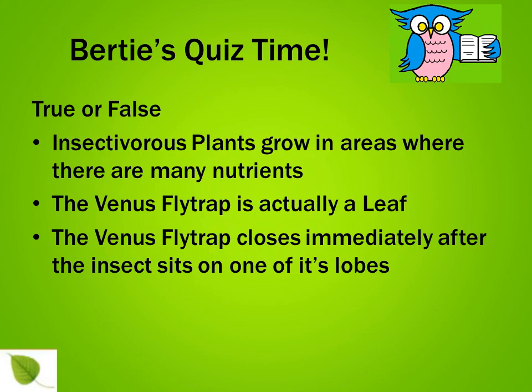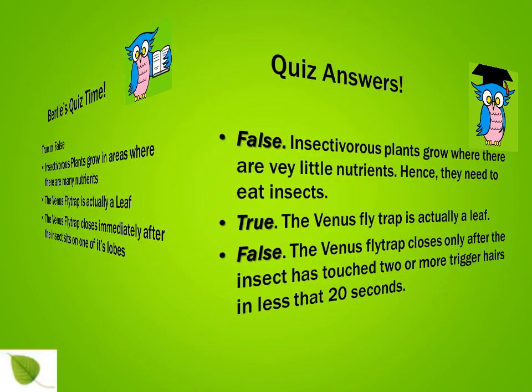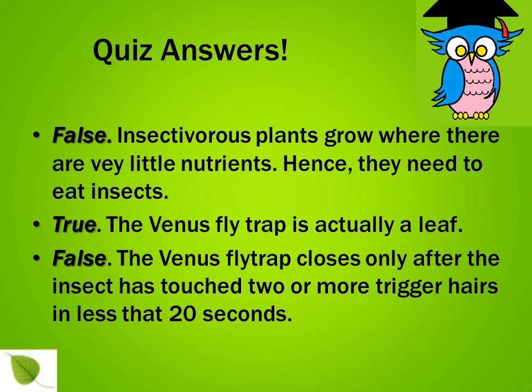Let's have a look at the solution. False — an insectivorous plant grows where there are very little nutrients, hence they need to eat insects. The next is true — the Venus flytrap is actually a leaf. The last one is false too — the Venus flytrap closes only after the insect has touched two or more trigger hair in less than 20 seconds.